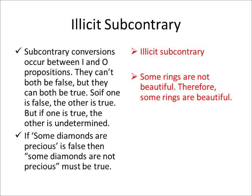Let's look at illicit subcontrary now. Remember, these are in the bottom of your square of opposition. Subcontraries are I and O propositions, and they can't both be false, but they can both be true. So if one is false — like I is false — then O must be true. But if I is true, we don't know what O is; it's undetermined. For example, a good inference: if 'some diamonds are precious' is false, then 'some diamonds are not precious' must be true, because they can't both be false.